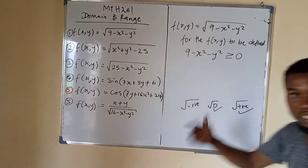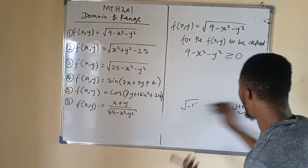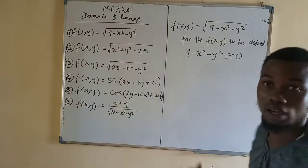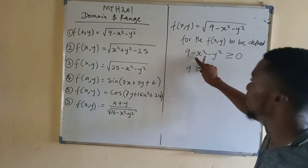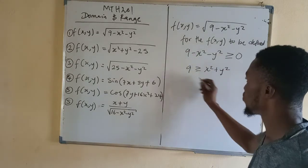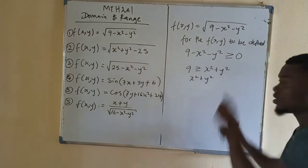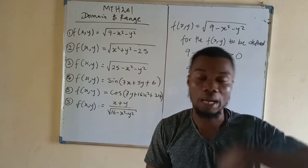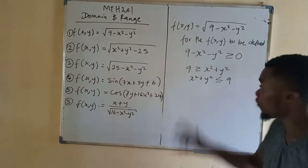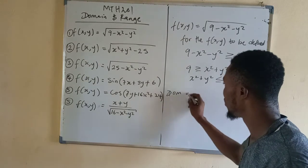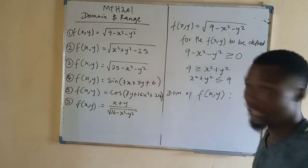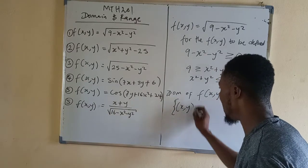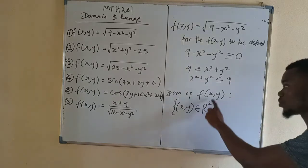So everything inside can be 0 or greater than 0, but never negative. Now we rearrange: move negative x squared and negative y squared to the other side. So we have that 9 is greater than or equal to x squared plus y squared, which means x squared plus y squared is less than or equal to 9. So we can now write the domain: the set of (x,y) that are elements of ℝ² such that...